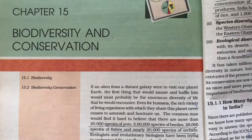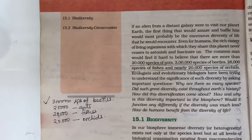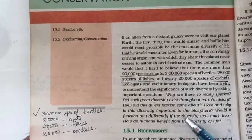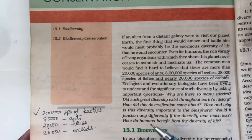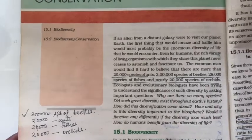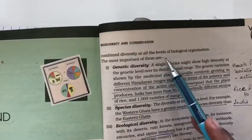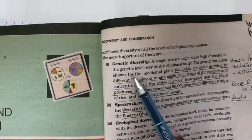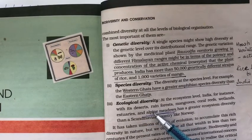Let's talk about Chapter 15: Biodiversity and Conservation. Biodiversity is the variety of living organisms on Earth. There are around three lakh species of beetles, 20,000 ants, 28,000 fishes, and 20,000 orchids. It was Edward Wilson who described combined diversity at all levels of biological organization. There could be genetic diversity, species diversity, and ecological biodiversity.